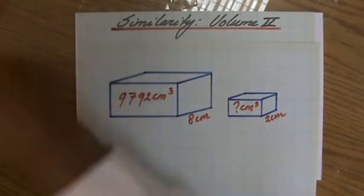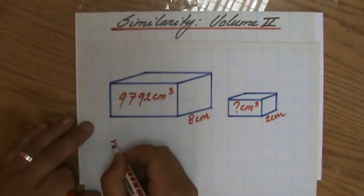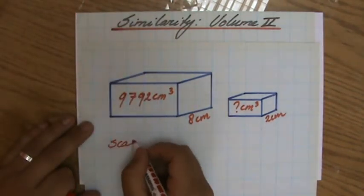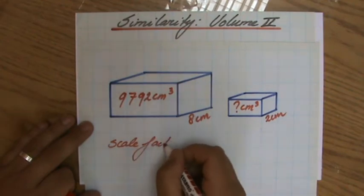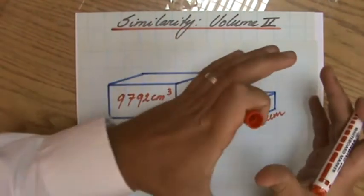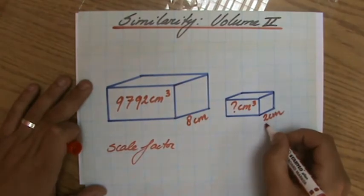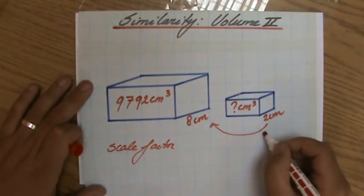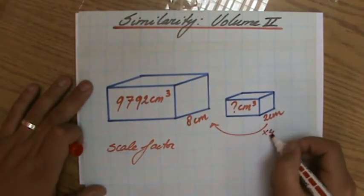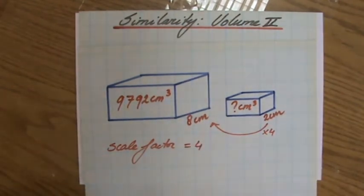You can already say that the scale factor depends on how you look at it. You can go from big to small or from small to big. Let's go from small to big to avoid fractions — that gives us 4. The scale factor is 4.